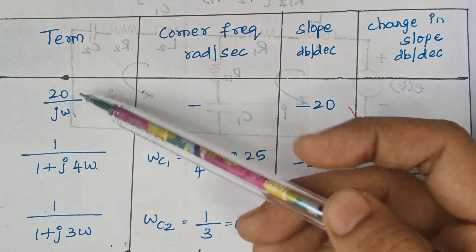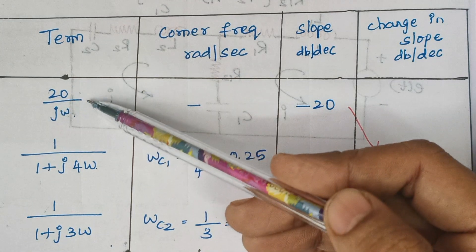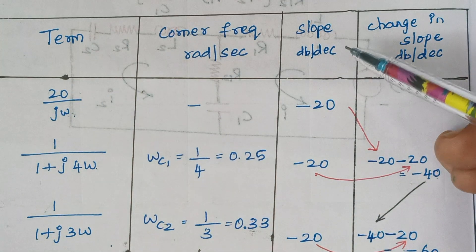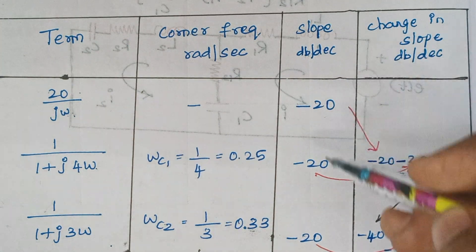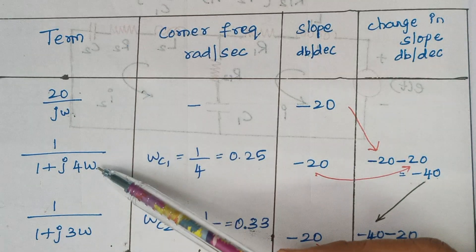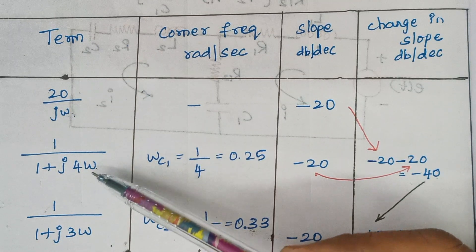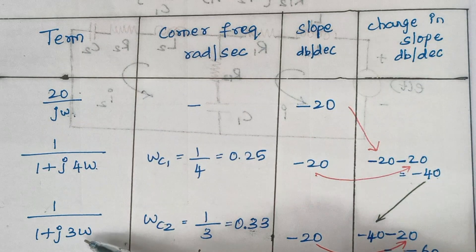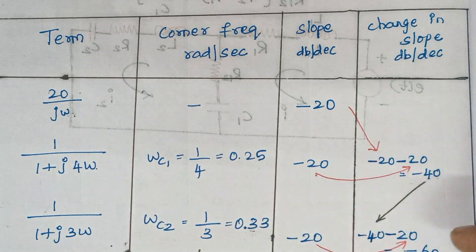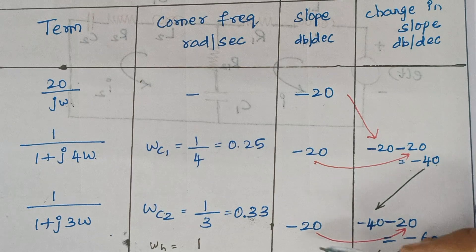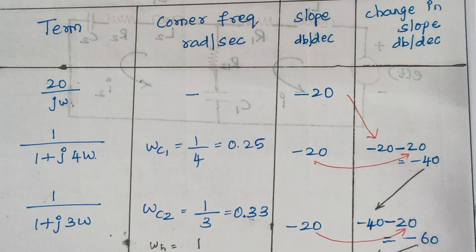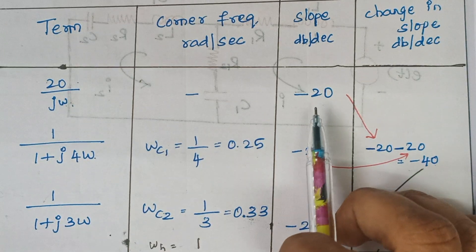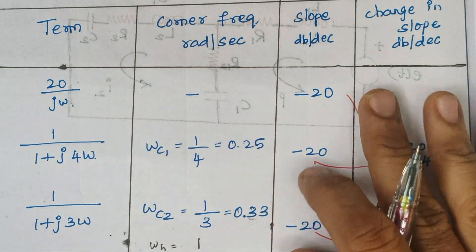If omega lies in the numerator — for example, 20·omega — then the slope contributed will be plus 20. And here again, omega lies in the denominator, so the slope contribution is minus 20. Again here, omega lies in the denominator and the slope contribution is again minus 20.